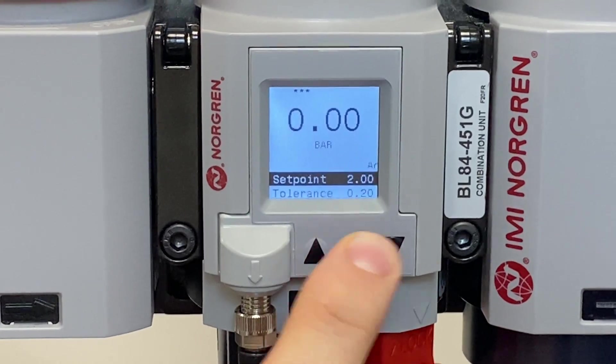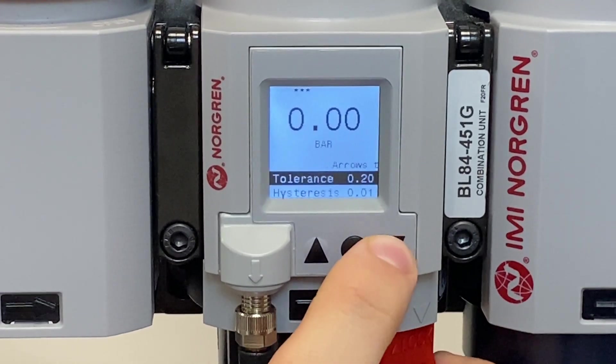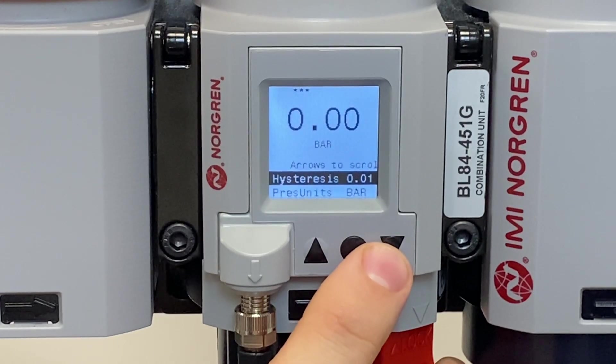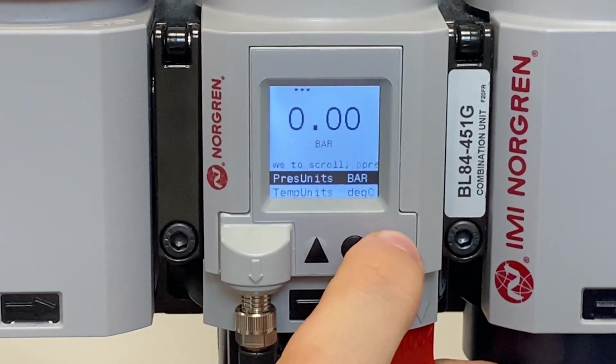We can alter our hysteresis, our pressure units from bar or psi, our temperature units, our rotation if you want to invert your regulator.